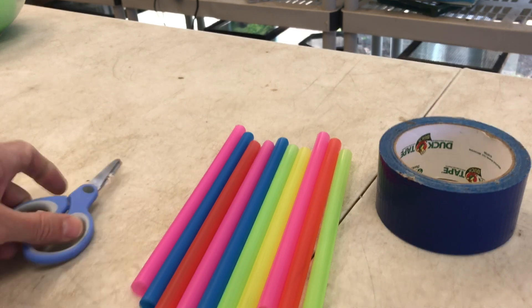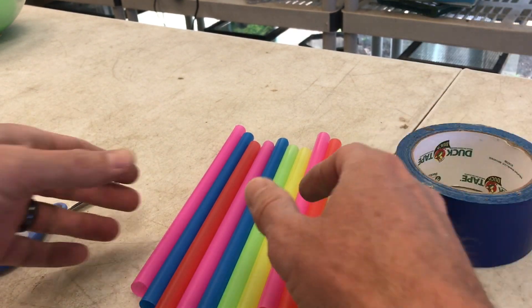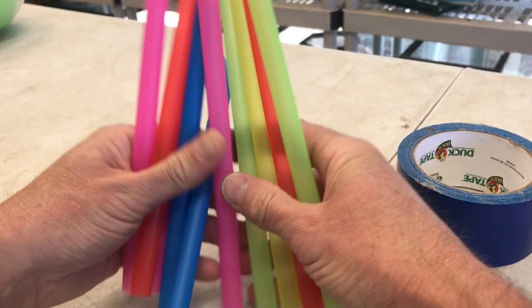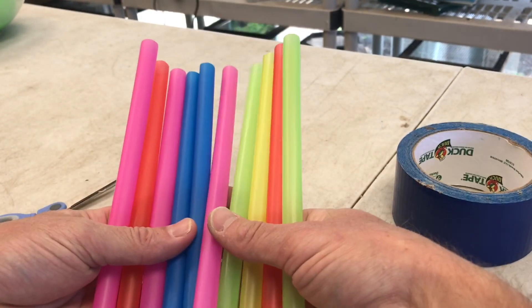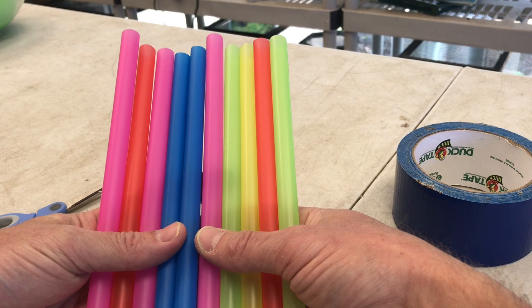It's really easy. All you need is scissors to cut our straws, some tape to hold them together, and a bunch of straws. I have some fat milkshake straws here in cool colors. You can pretty much use any kind of straw you can get your hands on.